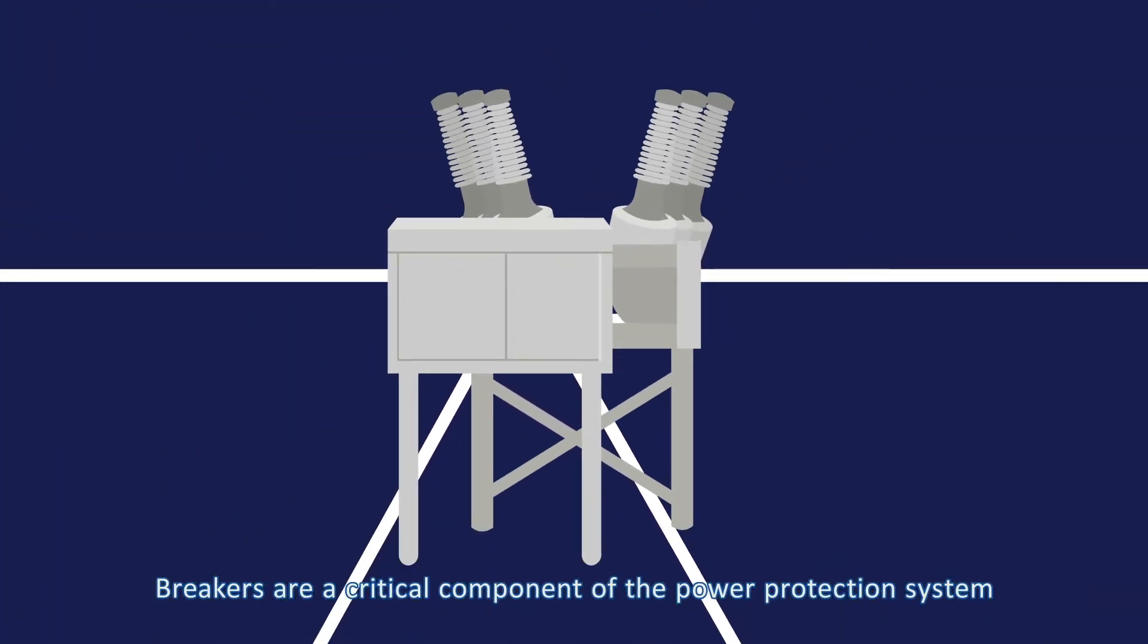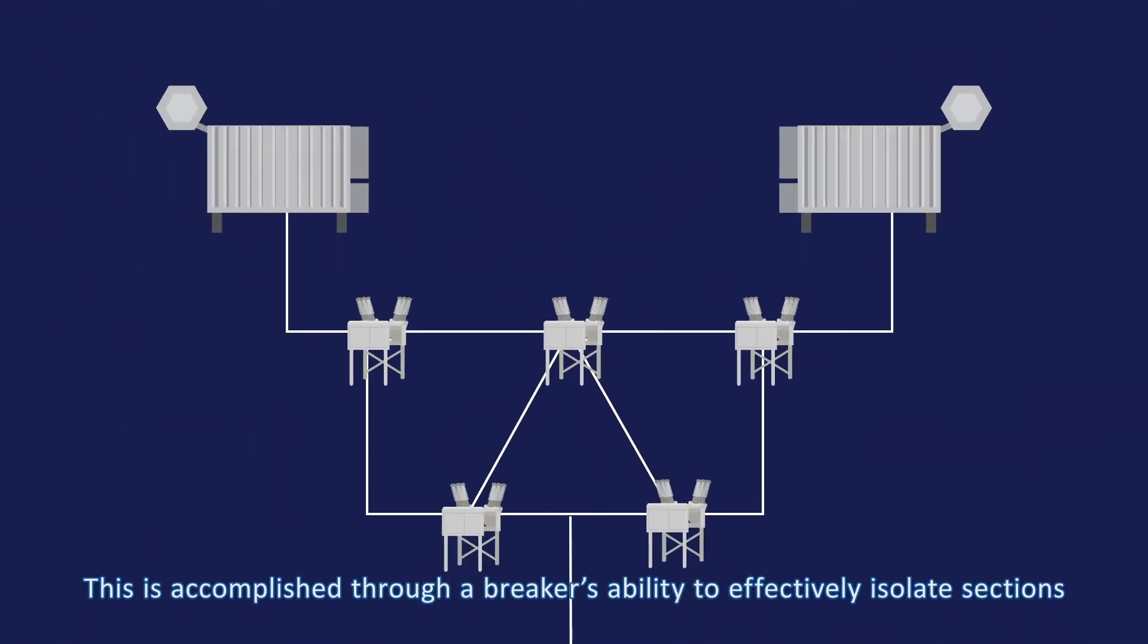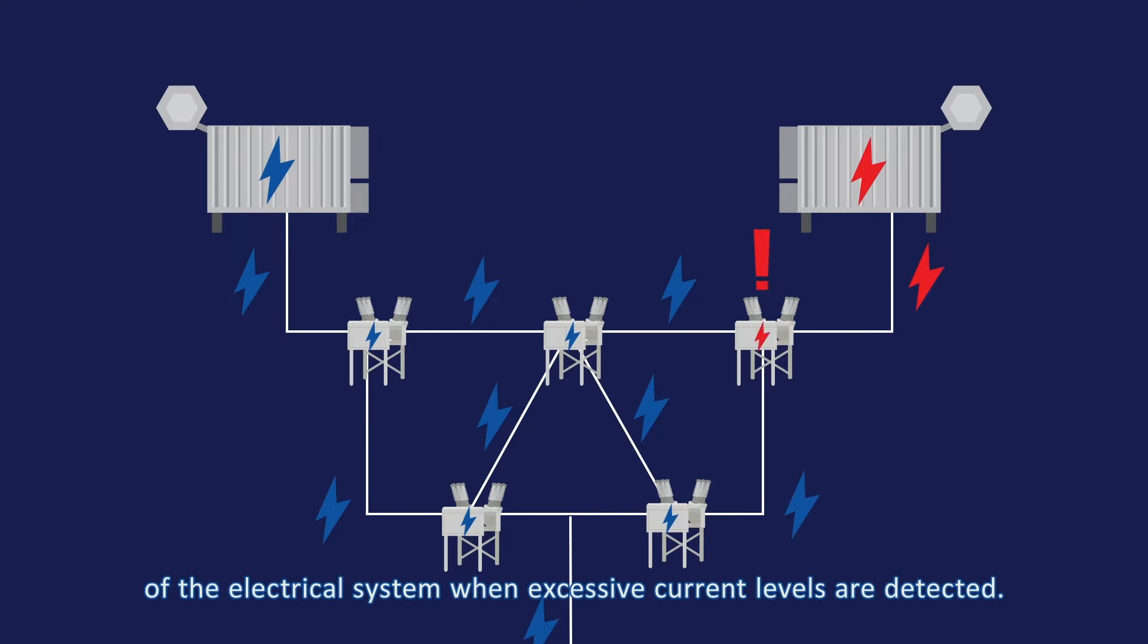Breakers are a critical component of the power protection system and are responsible for protecting other components on the electrical grid from damaging fault currents. This is accomplished through a breaker's ability to effectively isolate sections of the electrical system when excessive current levels are detected.